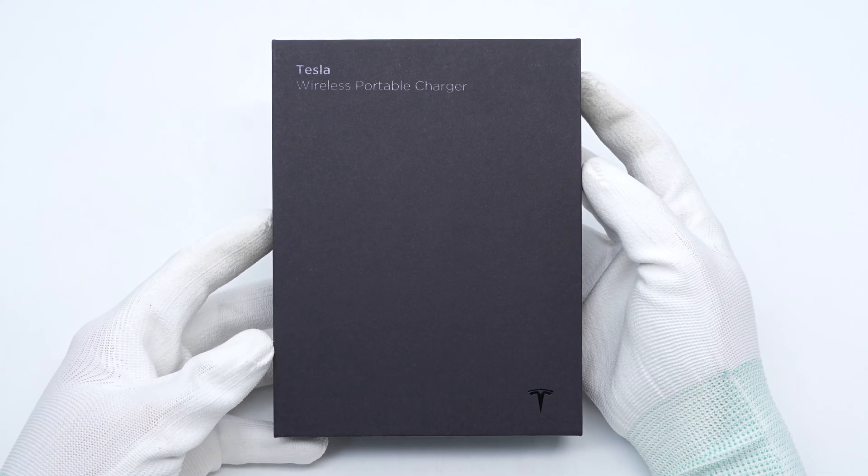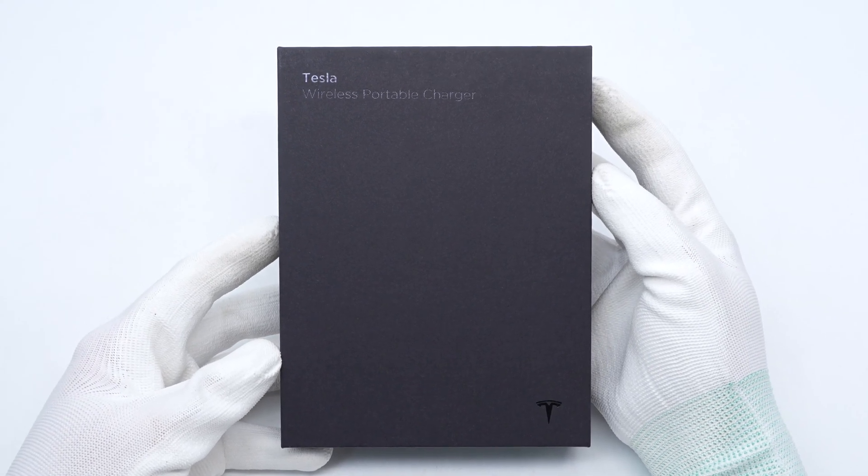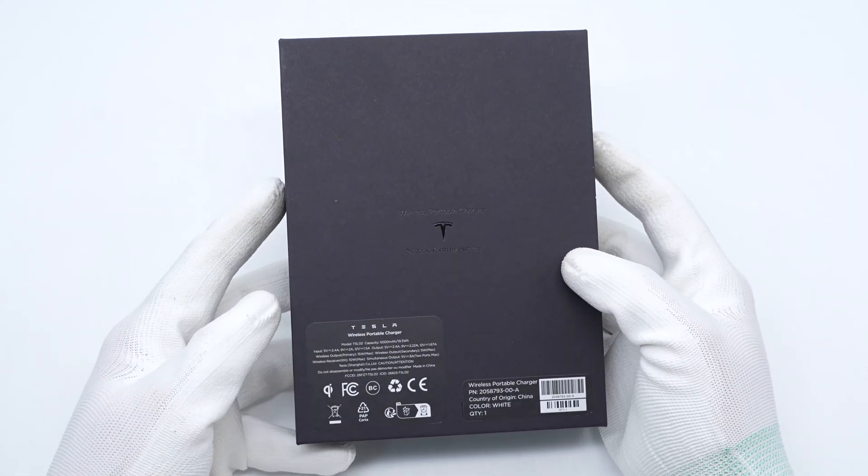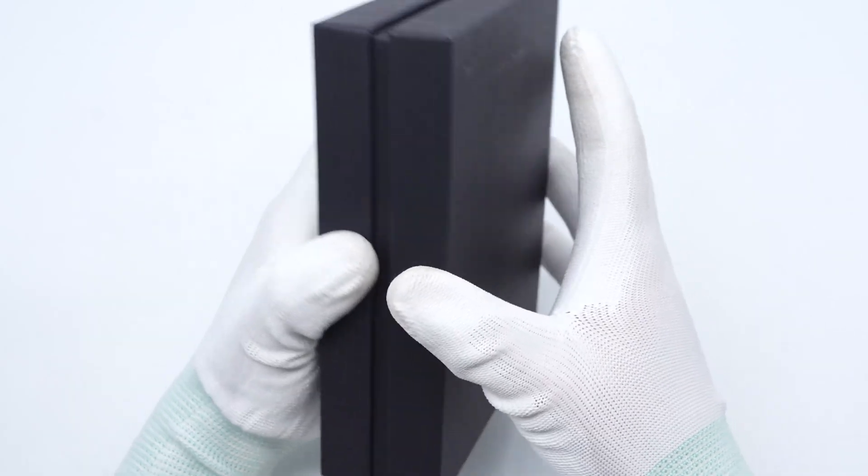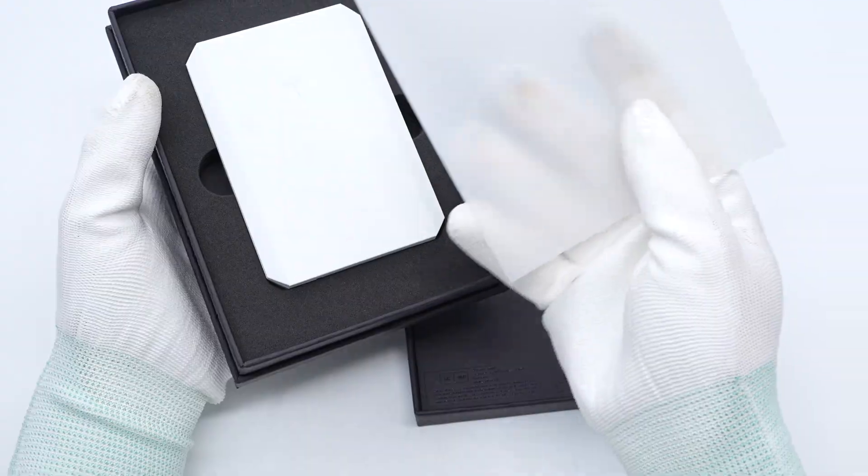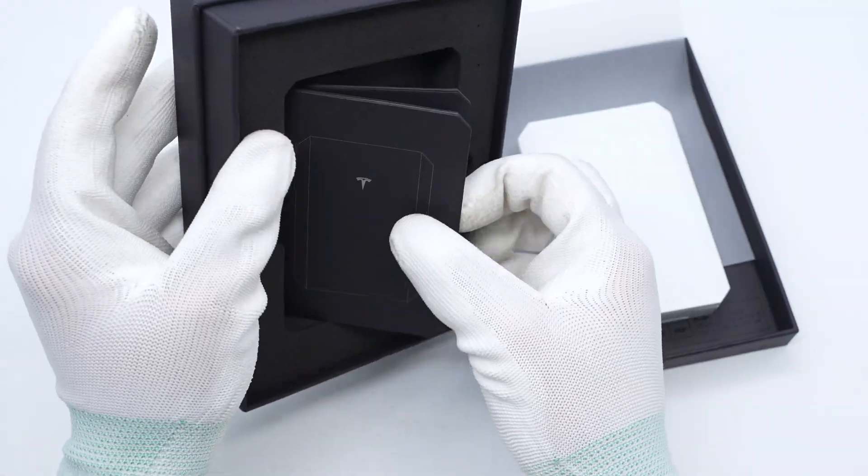Tesla Wireless Portable Charger is printed on the top of the black box. The specs info is printed on the back of the box. We will talk about it later. Open the box. The box contains the charger and some documents.